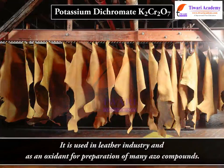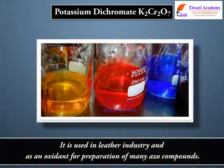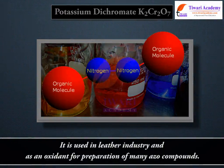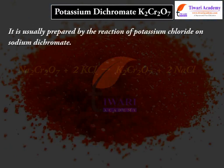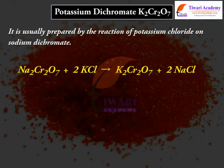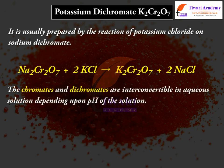It is used in the leather industry and as an oxidant for preparation of many azo compounds. It is usually prepared by the reaction of potassium chloride on sodium dichromate: Na₂Cr₂O₇ + 2KCl → K₂Cr₂O₇ + 2NaCl. The chromates and dichromates are interconvertible in aqueous solution depending upon the pH of the solution.